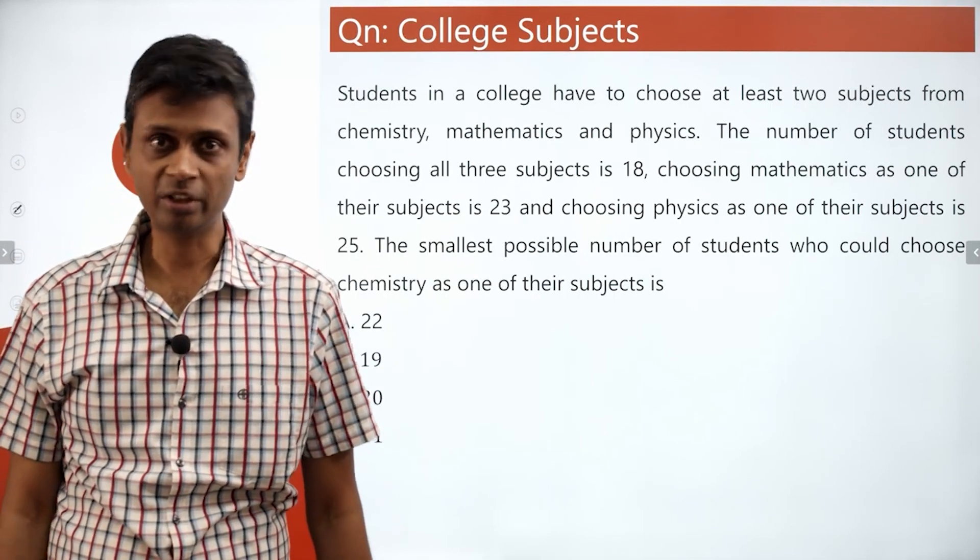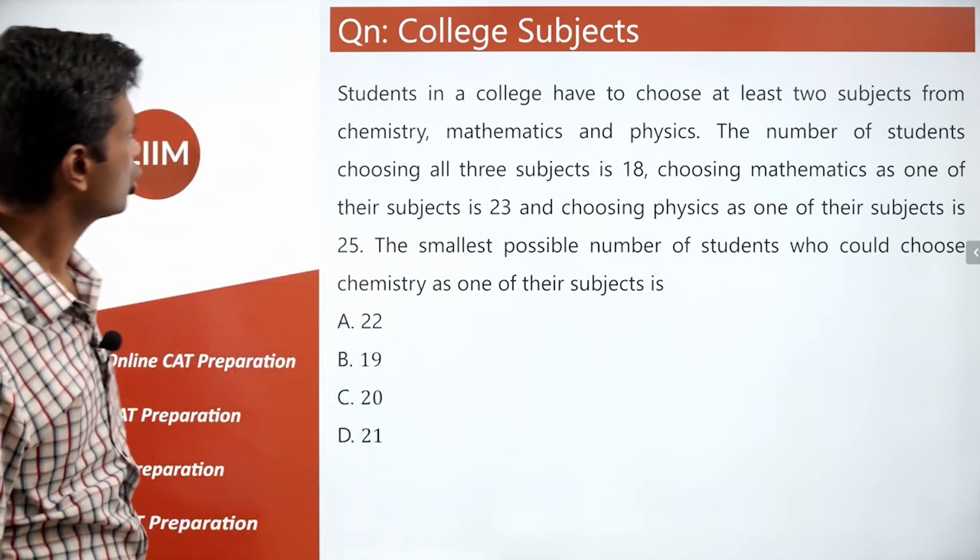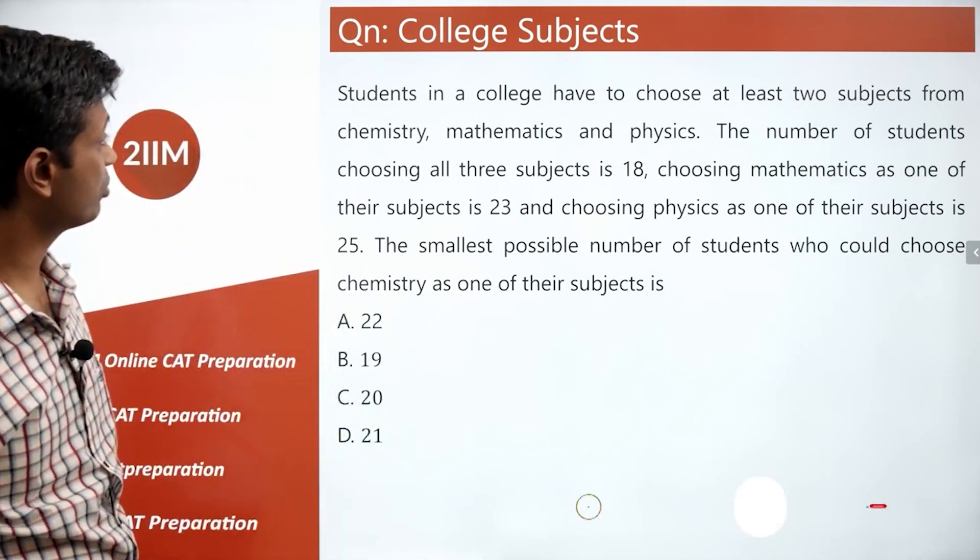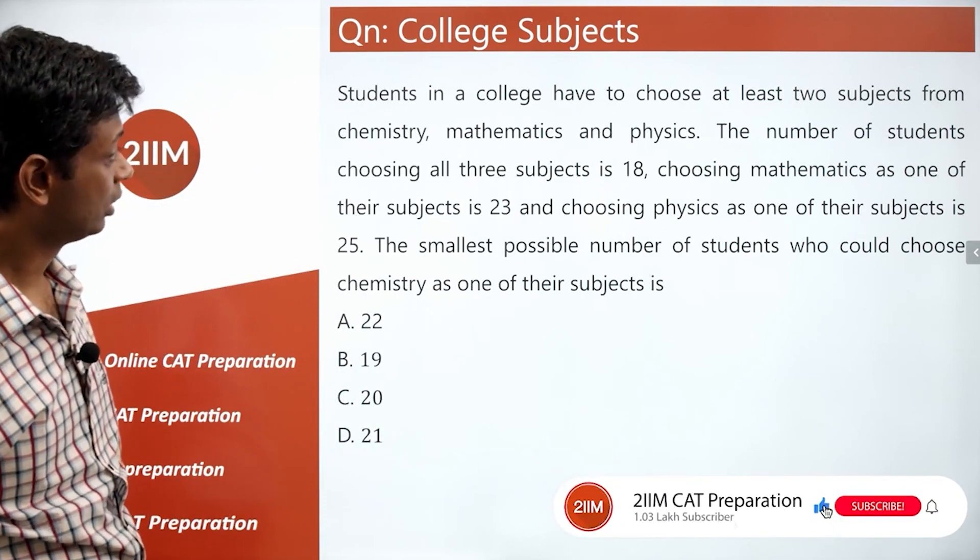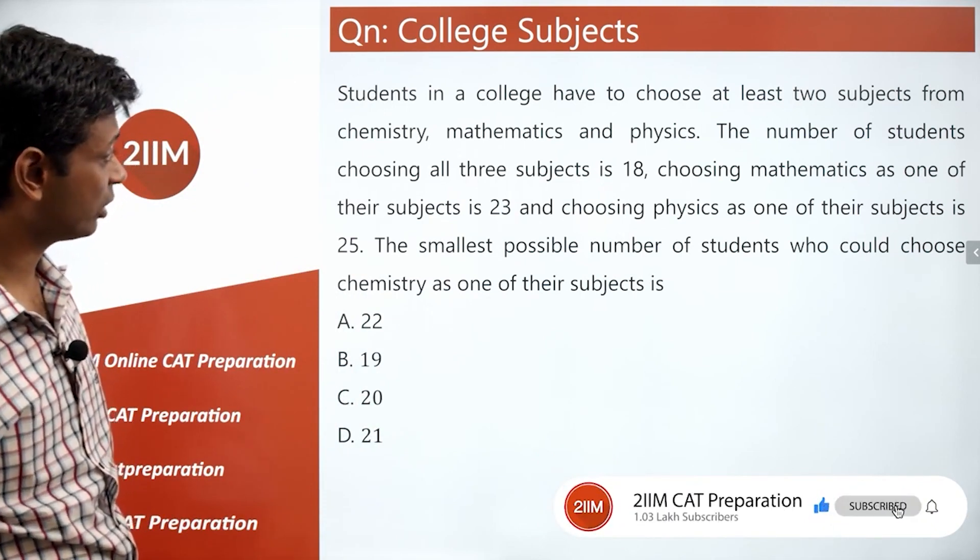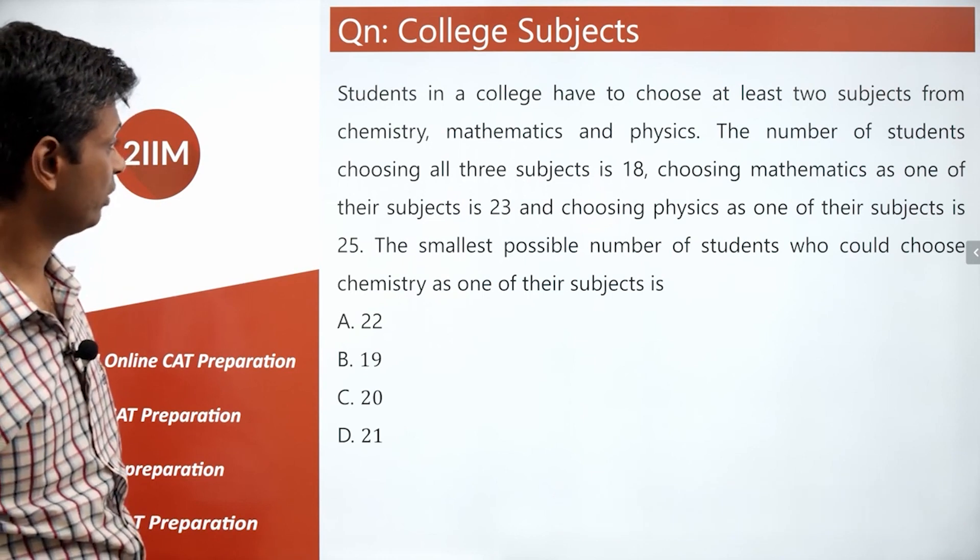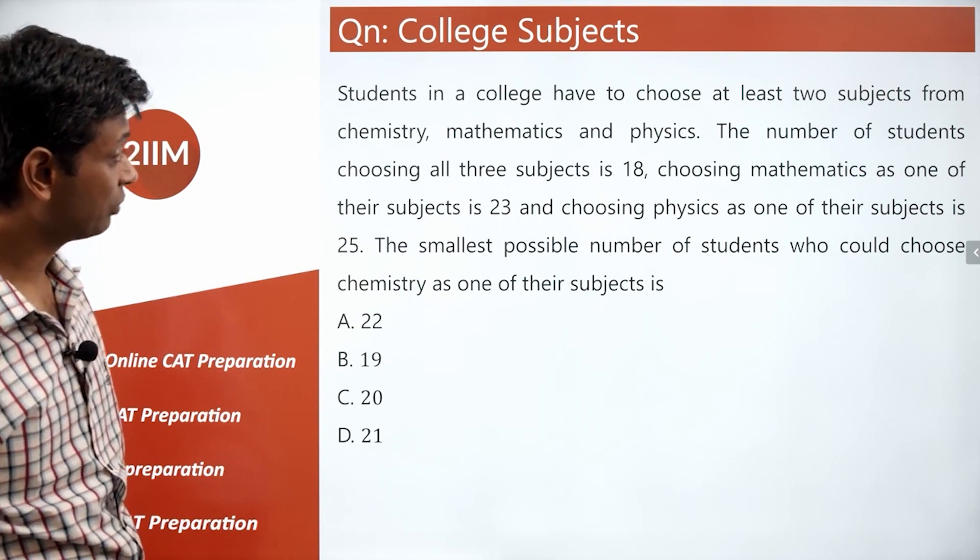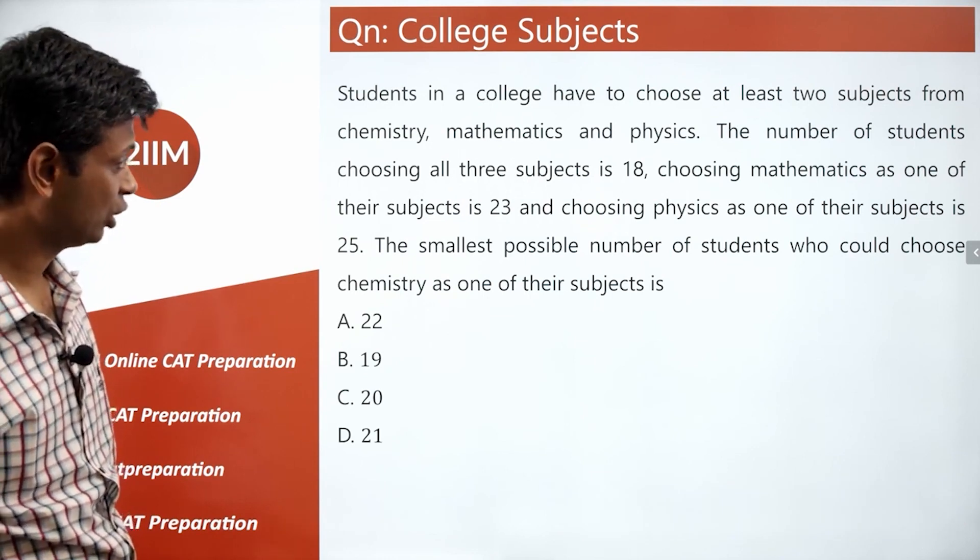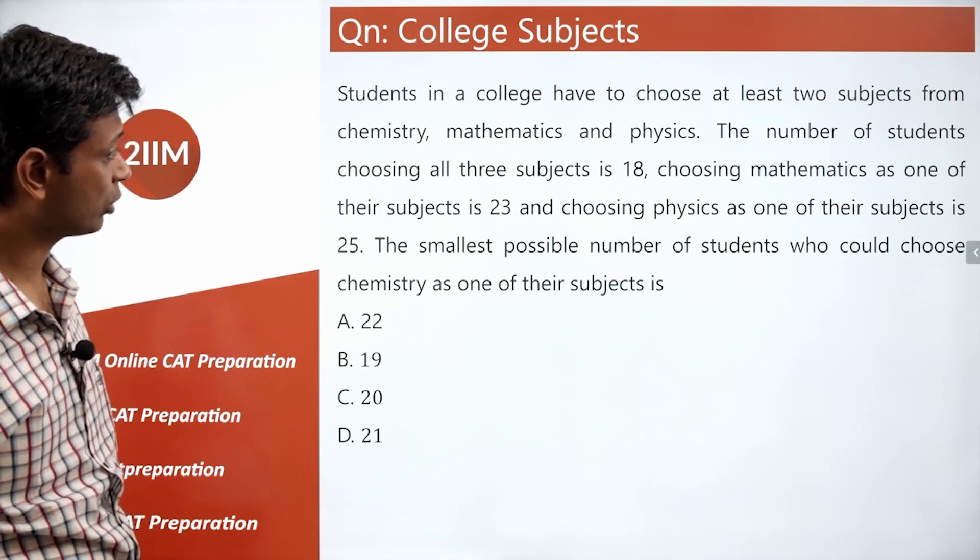This is a question from set theory. Interesting one, let's try this. Students in a college have to choose at least two subjects from chemistry, math, and physics. The number of students choosing all three subjects is 18, choosing maths as one of their subjects is 23, choosing physics as one of their subjects is 25. The smallest possible number of students who could choose chemistry as one of their subjects?